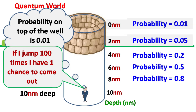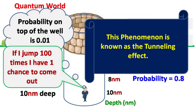This phenomenon is known as the tunneling effect — that is, Mr. X having energy less than the height of the energy barrier still crosses the barrier. This is called the tunneling effect.